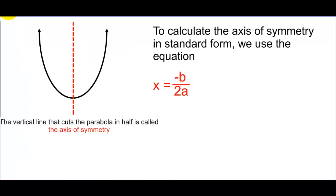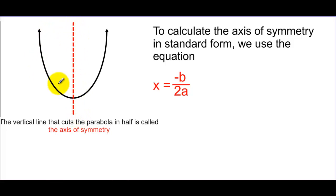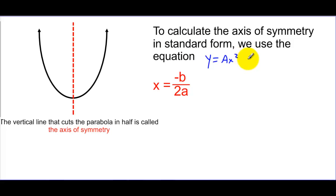So I'm going to start off by calculating the axis of symmetry. When I have my U-shaped graph, I always need that dotted line through the middle, and that's going to tell us where the whole graph is centered. We're going to use this formula: negative b over 2a. From standard form ax² + bx + c, I take the b value and the a value and plug those in — that gives the axis of symmetry line.